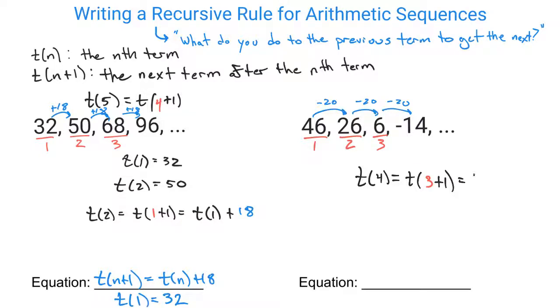And then that means that you're doing your term 3 and then you're going to be subtracting 20 from it. So to find t(4), you're subtracting 20 from t(3). So our general notation for n would be t(n+1) is equal to t(n), the one before it, minus 20. And then you still need that initial term statement to make sure everybody knows that you're starting at the 46th term for term 1.